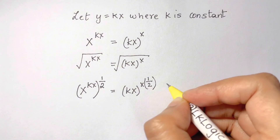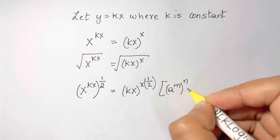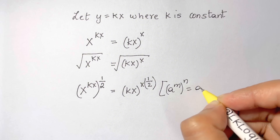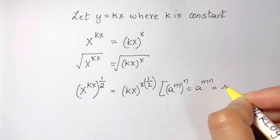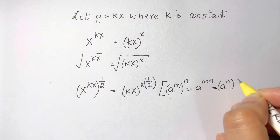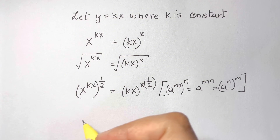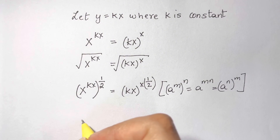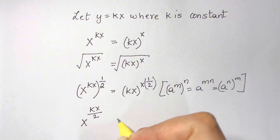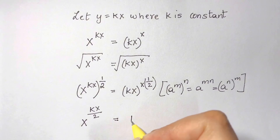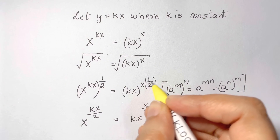Now we are going to use the law: a to the power of m, whole to the power of n, equals a to the power of mn — the powers get multiplied. Applying this, we get x to the power of kx over 2, which equals kx to the power of x over 2. We just multiplied the powers.